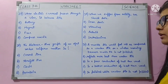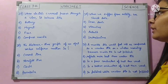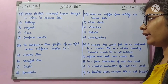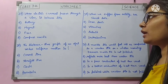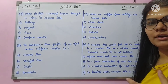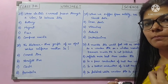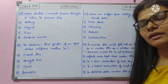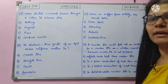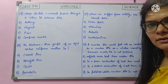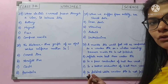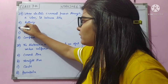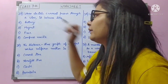Question number 27: when electric current passes through a wire, it behaves like — we studied this. When current flows through any wire, it acts as a magnet. We even made electromagnets based on this. Answer: it behaves as a magnet.